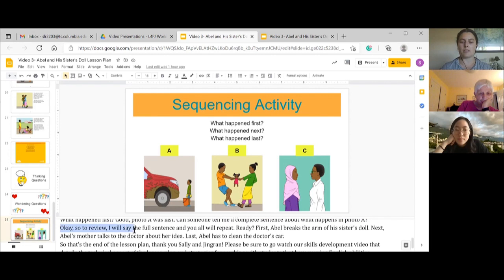Okay. So to review, I will say the full sentence again and you all will repeat after me. So if you're ready, we'll start. First, Abel breaks the arm of his sister's doll. Abel breaks the arm of his sister's doll. Good.